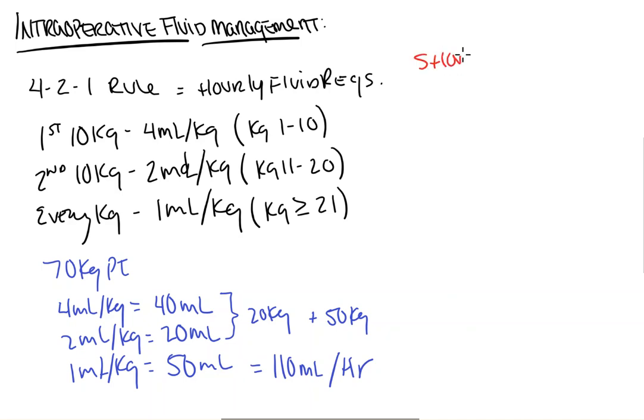So the shortcut, and there's always a shortcut, or at least most of the time, is patient's weight in kilograms plus 40. So long as they weigh at least 20 kilos. So for a 70 kilogram man, it's 110 ml, and you can check, do the math out like we did here, and just make sure that it's the same.